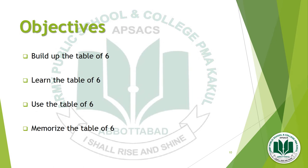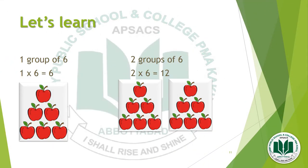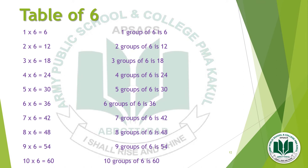The objectives for this topic are: build up the table of 6, learn the table of 6, use the table of 6, and memorize the table of 6. We build up the multiplication table of 6 based on the idea of '6 more than.' For example, 6 ones are 6 — that is 1 group of 6; 6 twos are 12 — that is 2 groups of 6. In this way we make the full table of 6 by making the same number of groups of 6.